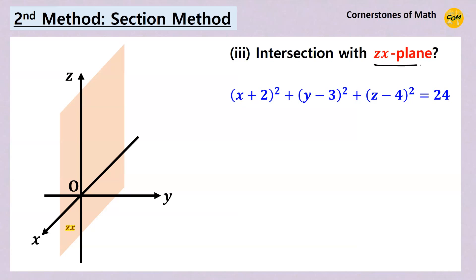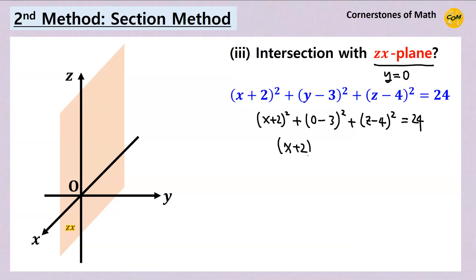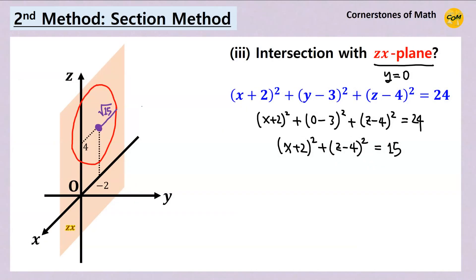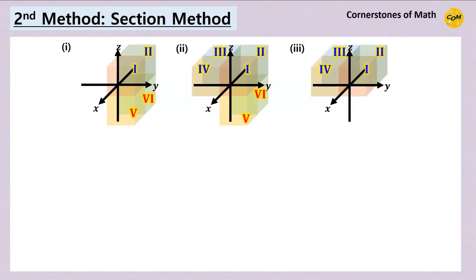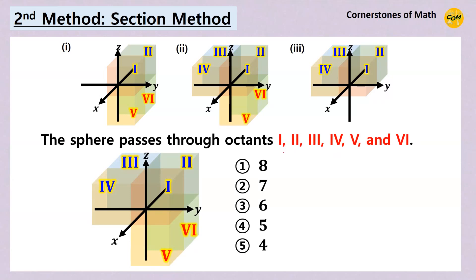For the intersection with the zx-plane, we substitute y equals 0, giving x plus 2 squared plus z minus 4 squared equals 15. So the circle is on the zx-plane with center minus 2, 4 and radius square root of 15, which is greater than 2 but less than 4. The sphere therefore exists in the corresponding regions, passing through octants 1, 2, 3, and 4. Combining all cases, the sphere passes through octants 1, 2, 3, 4, 5, and 6, so the correct choice is choice 3.